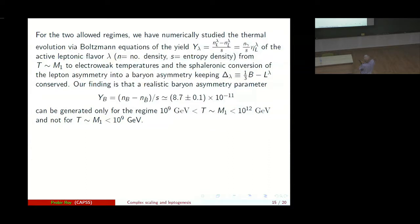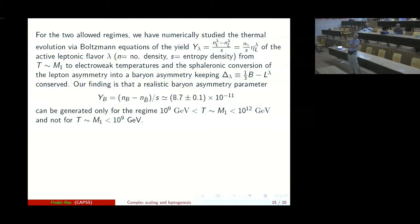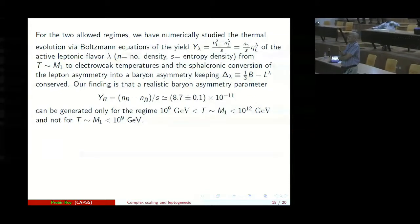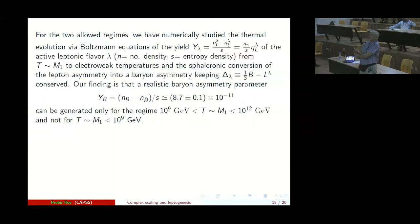And we look at the yield Y_lambda which is n_L_lambda minus n_L_bar_lambda over the entropy density. And that's really the photon density over the entropy density times B minus L lambda. And then for the active lepton flavor lambda, we can work it out. And we consider the evolution with temperature by Boltzmann equation from the temperature of the order of M_1 to electroweak temperature. And consider the sphaleron conversion of the leptogenesis into a baryon asymmetry, keeping this one-third B minus L lambda lambda being the flavor conserved. And our finding is that a realistic value on asymmetry parameter Y_B is n_B minus n_B_bar over S. It can be generated at the level 8.7 plus minus 0.1 times 10^-11 only for the second regime where T is between 10 to 9 and 10 to the 12 of the order of M_1.